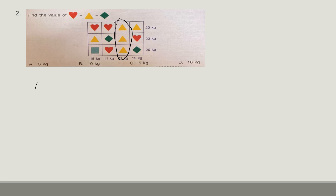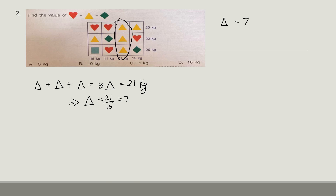3 triangles equal 21 kg. Therefore 1 triangle = 21 divided by 3 = 7. So now we know triangle equals 7. We also need to find heart and rhombus. Let's move next.